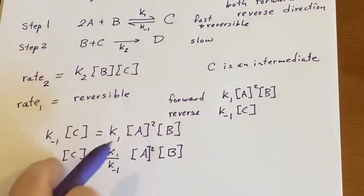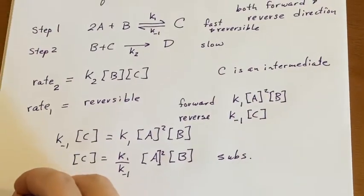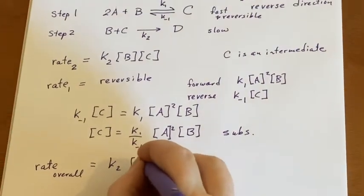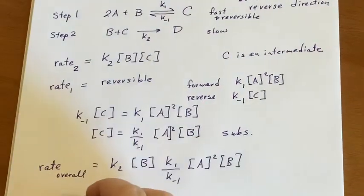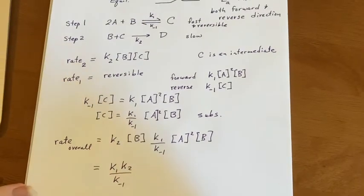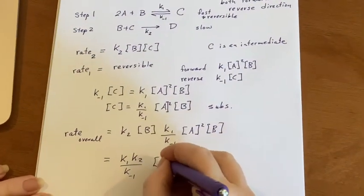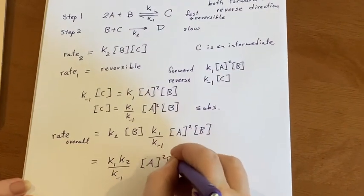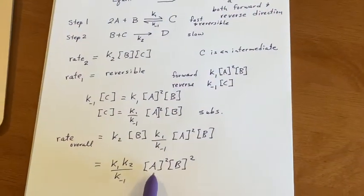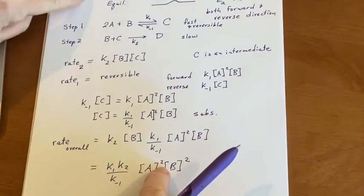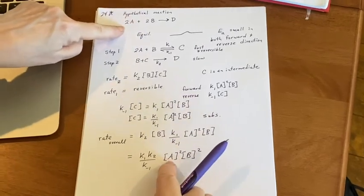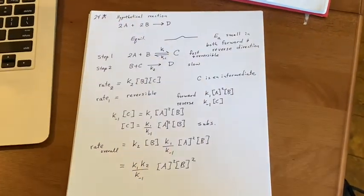I can substitute into rate two. The overall rate will be rate two with this substitution. Rearranging: K₁K₂/K₋₁ times [A]² times [B]². Because I included all the steps, I'm not surprised it matched. These coefficients ended up being the exponents because I used all the steps in my analysis.